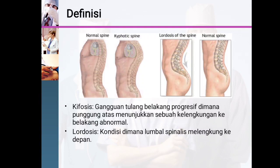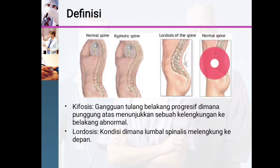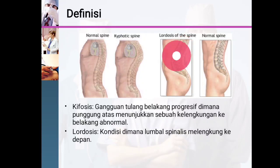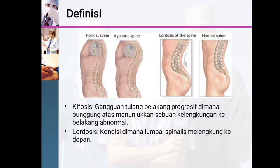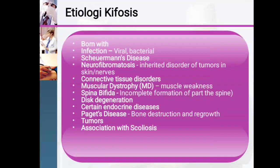Lordosis is a condition where the lumbar spine has a curvature that curves to the front. This is the normal spine or normal lumbar, and this is lordosis lumbar. Note that kyphosis happens at the thoracic vertebrae and lordosis happens at the lumbar vertebrae.